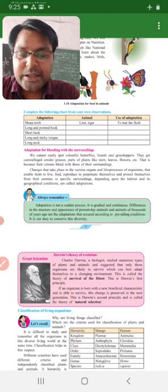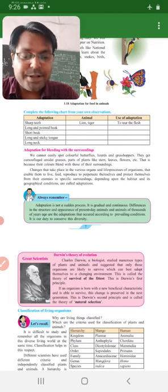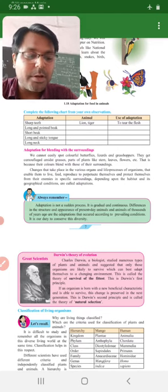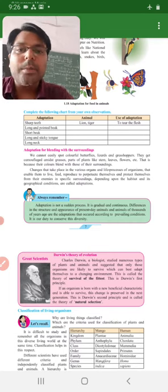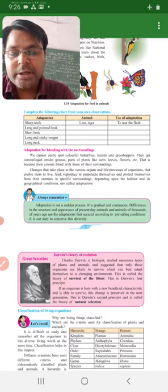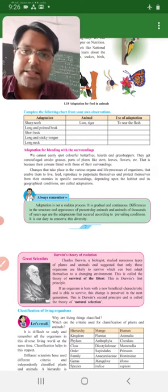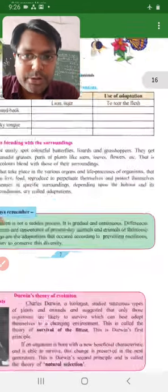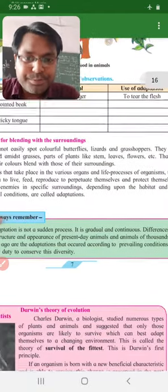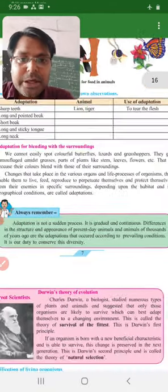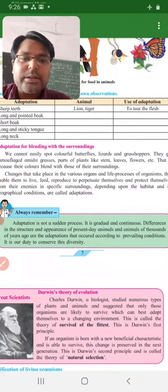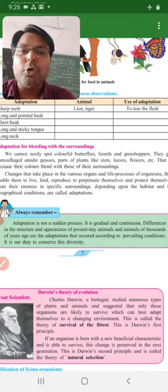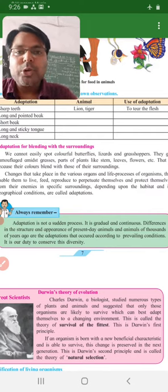They get camouflage amid grasses, parts of plants like stem, leaves, flowers. Toh they get camouflage, matlab woh khud ko dhal dete hai. Changes la lete hai - amid grasses, grasses mein, toh grasses ka jo color hota hai, us color mein woh kho jate hai. Dusra hai, ya phir stem ka jo color hai, leaves ka jo color hai, flowers ka jo color hai - us type ke colors mein woh animals ka color us color mein kho jate hai.